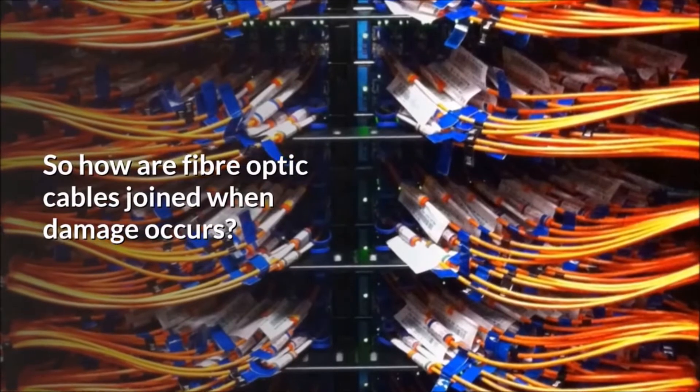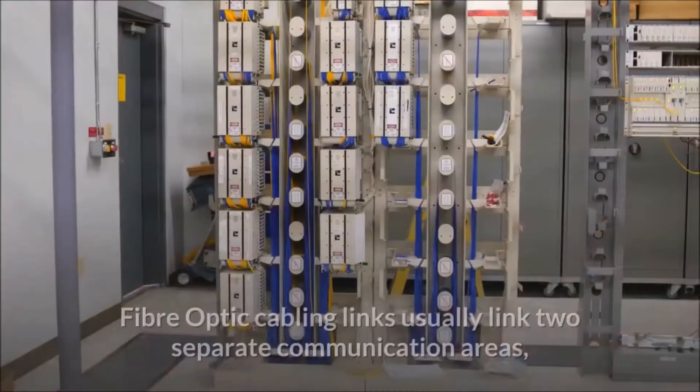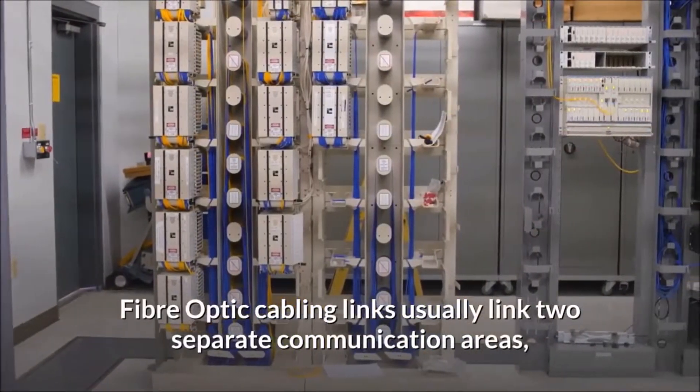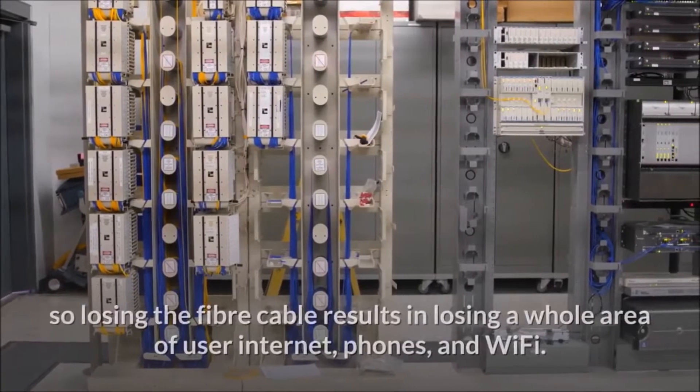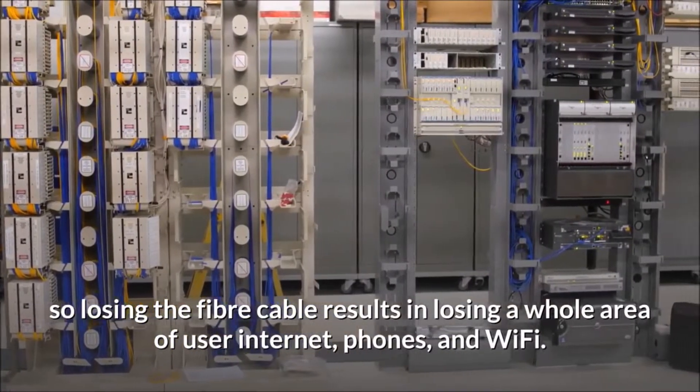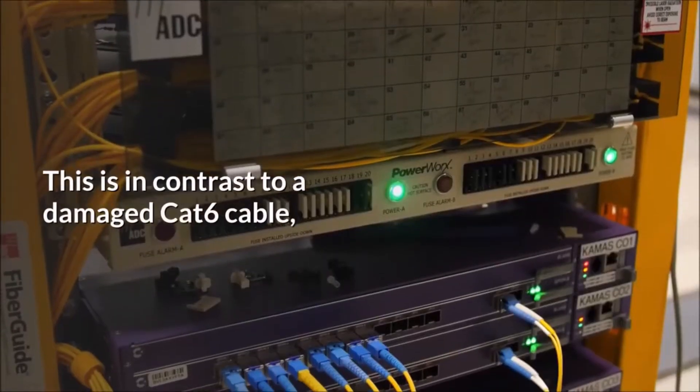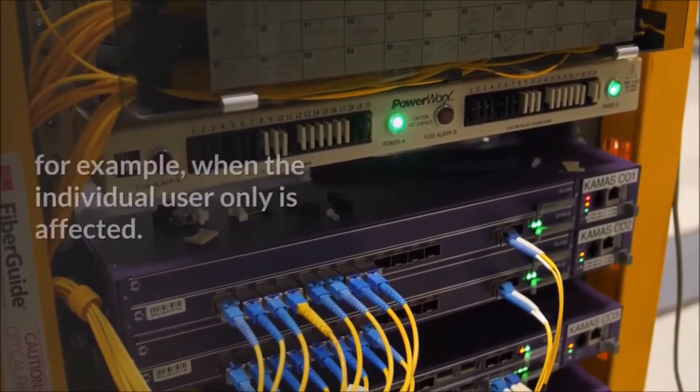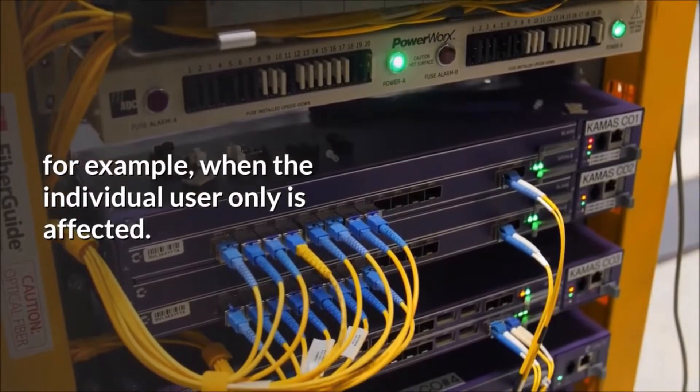So how are fiber optic cables joined when damage occurs? Fiber optic cabling links usually link two separate communication areas, so losing the fiber cable results in losing a whole area of user internet, phones, and Wi-Fi. This is in contrast to a damaged CAT6 cable, for example, when the individual user only is affected.